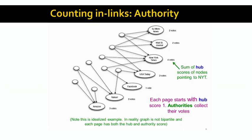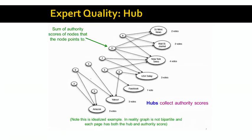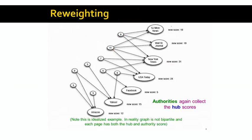After computing the authority scores on the right, we propagate them back to the hubs. Each hub sums up the authority scores of all pages it points to. For example, the first hub node gets a score of eight because two plus two plus four equals eight, and the second hub node gets a score of eleven because the authority scores it points to sum to eleven.